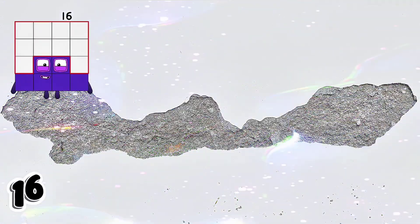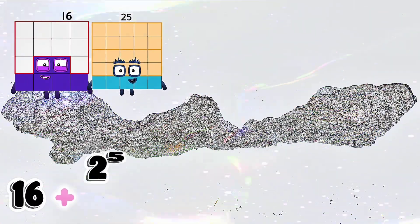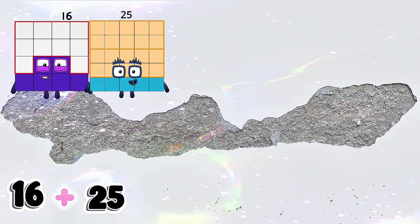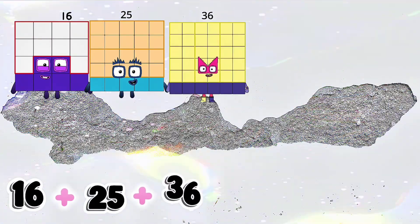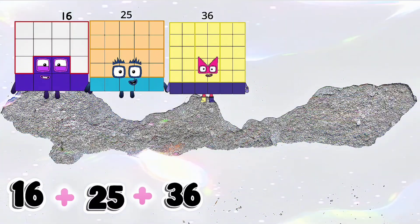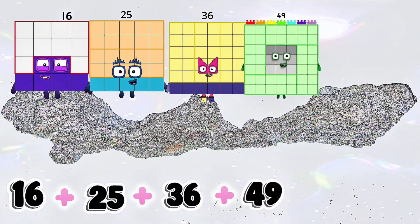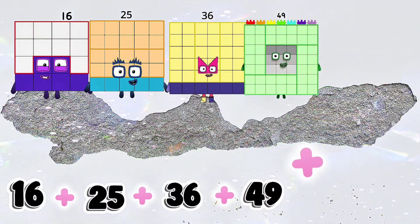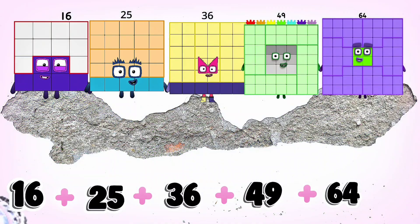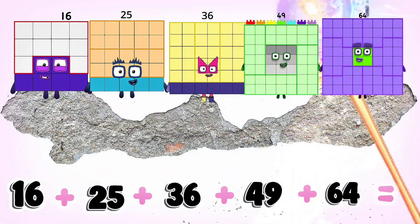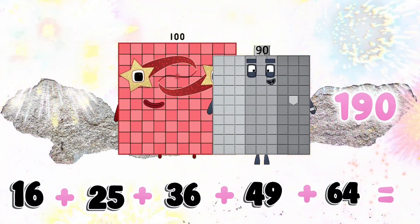16 plus 25 plus 36 plus 49 plus 64 equals 190.